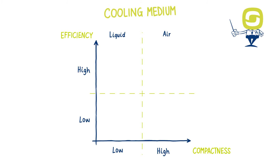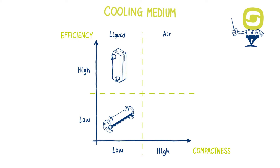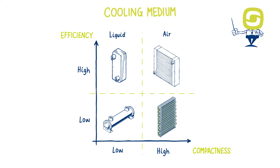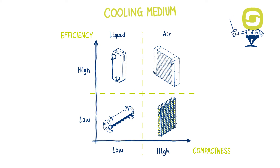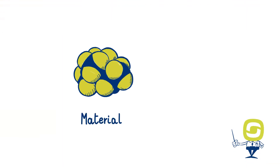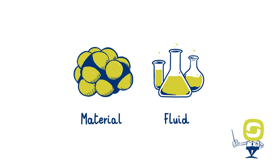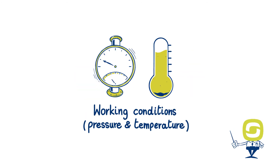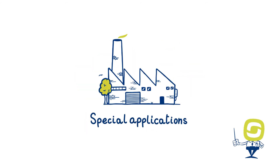The most used products in industrial applications are shell and tube, plates, finning tubes, plates and bars heat exchangers, each used in specific sectors. The choice of a heat exchanger is also based on material and fluid compatibility, working conditions, and special applications.